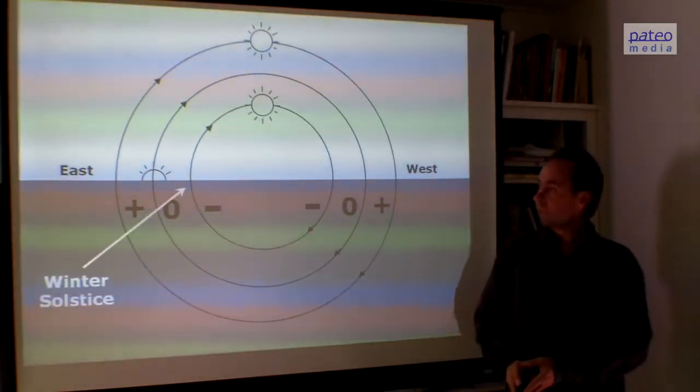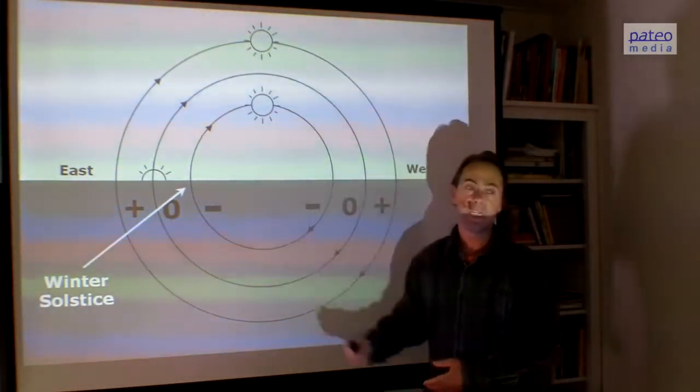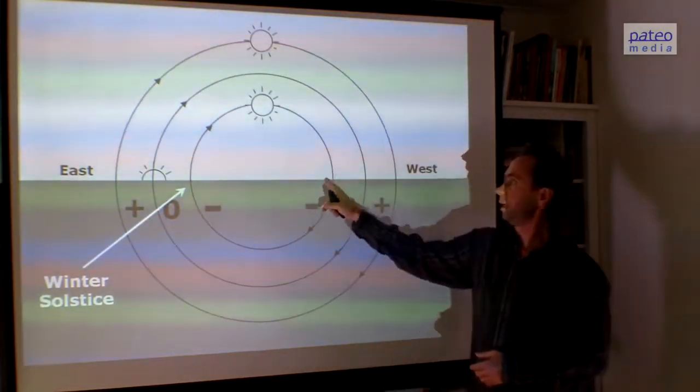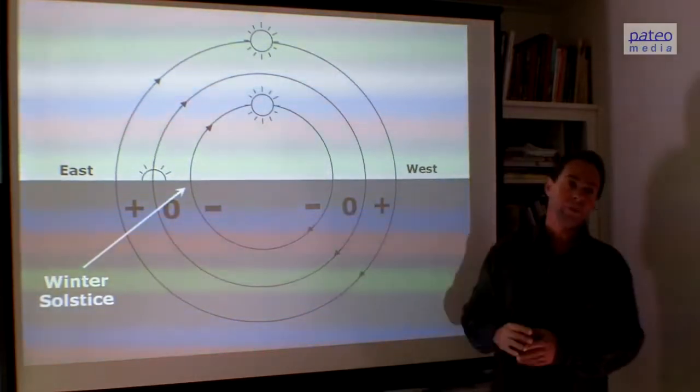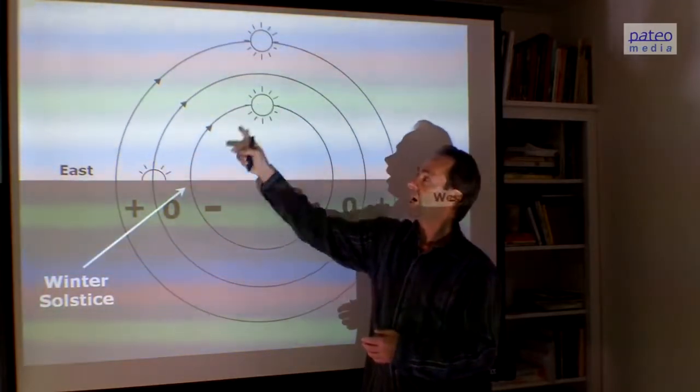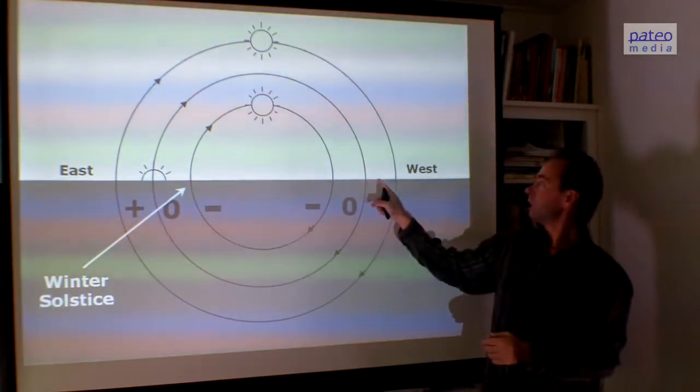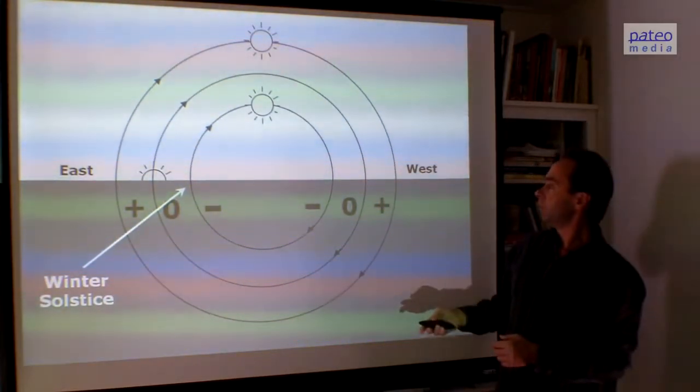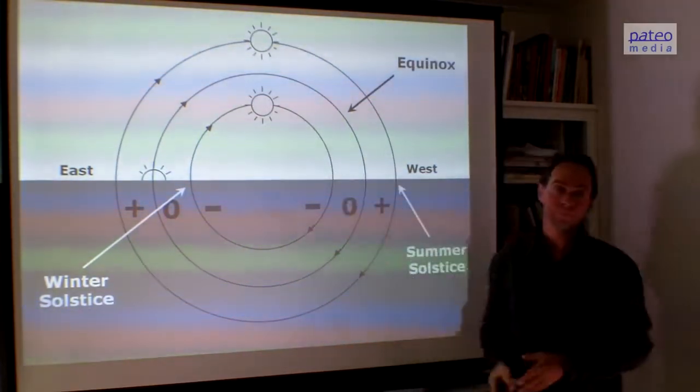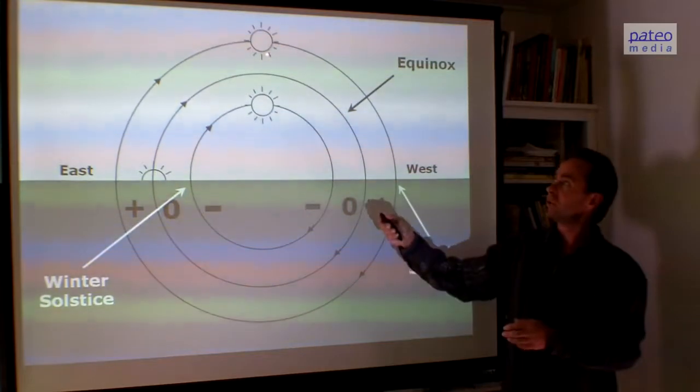At the moment of the winter solstice, the orbit or the bow of the sun is the smallest one. It rises here and it sets here. And the top of this bow is the lowest one in the whole year. Then it goes up again. Every day it climbs a little bit higher and makes a little bit wider until here. This is the equinox, the spring equinox. And then we rise at the summer solstice.